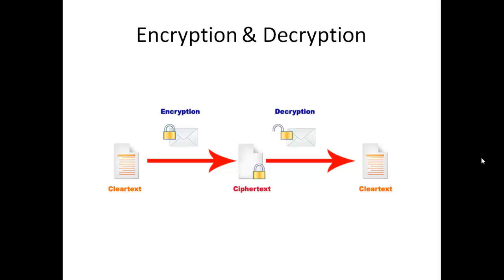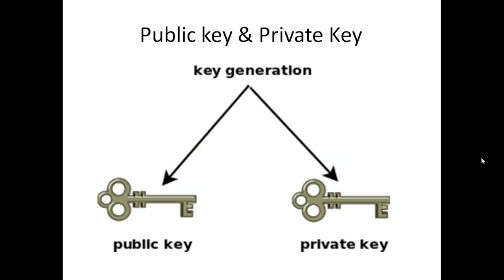Decryption is a process of converting ciphertext back into its original format. This can be achieved through two keys: one is the public key and another one is the private key.